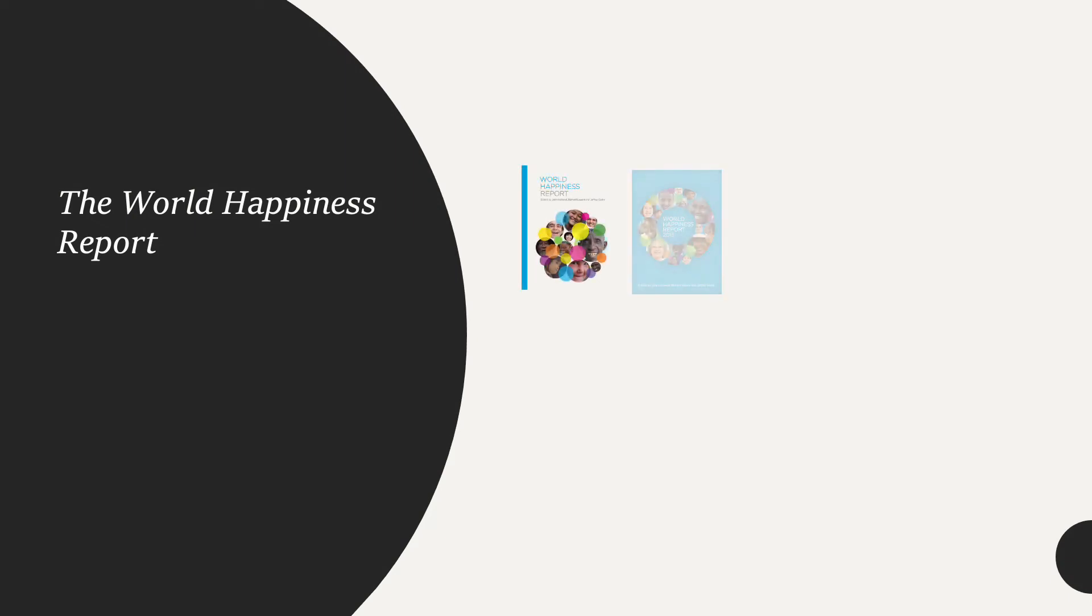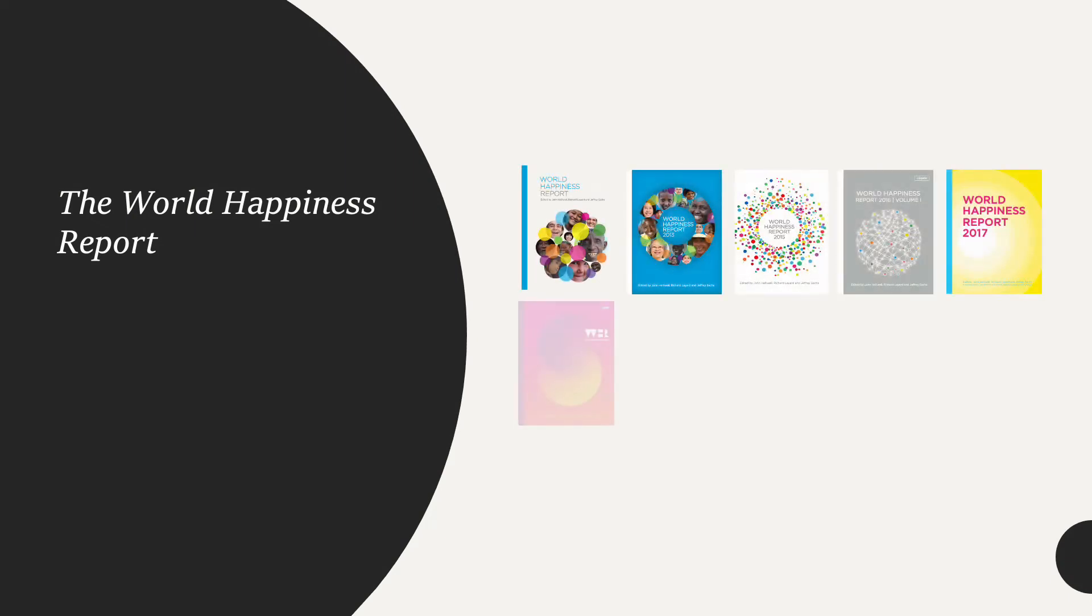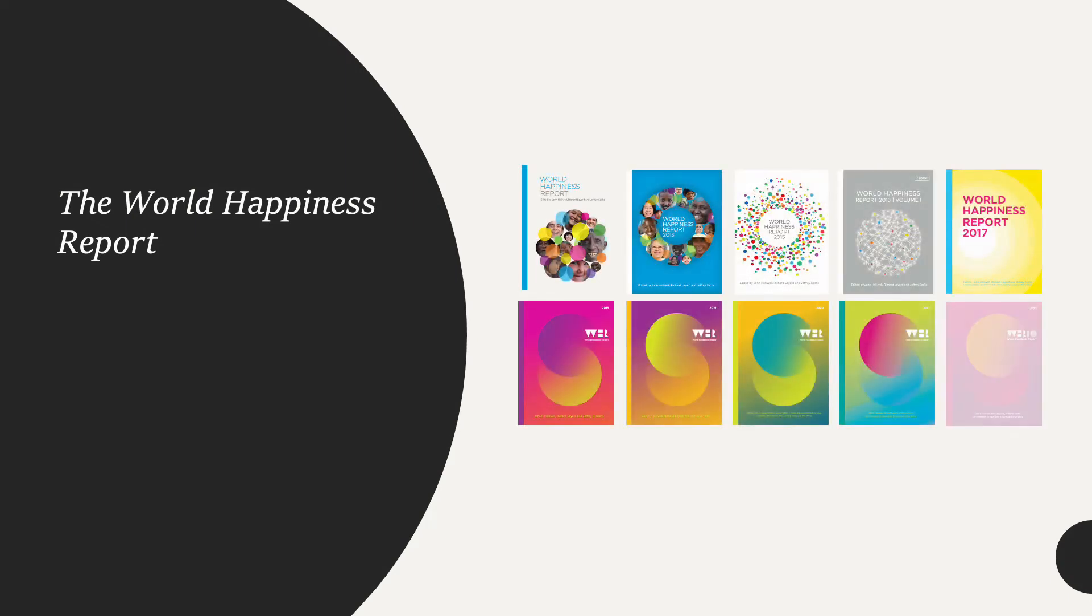The World Happiness Report is a yearly report published by a United Nations nonprofit that ranks countries based on people's happiness. First published in 2012, it uses data collected from people in over 150 countries through the Gallup World Poll survey.